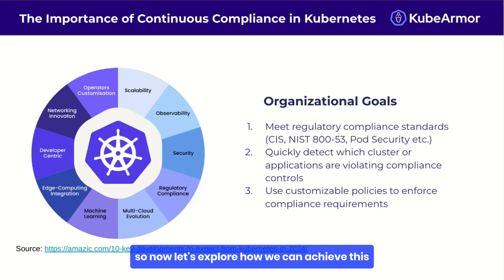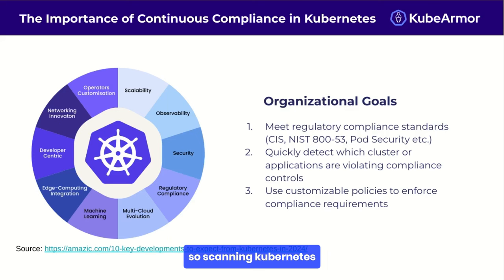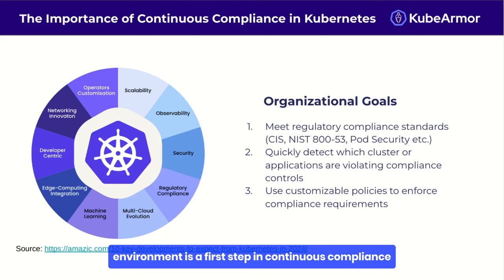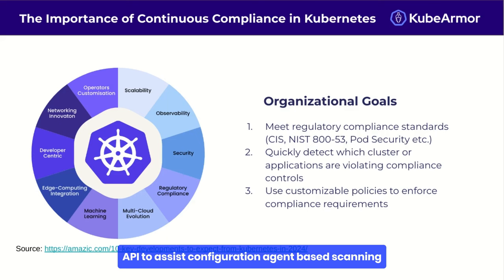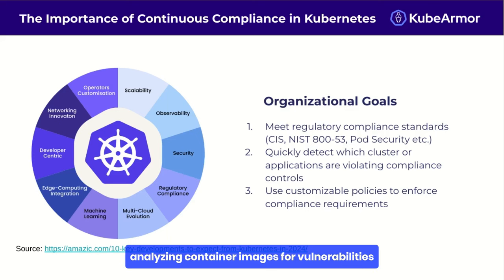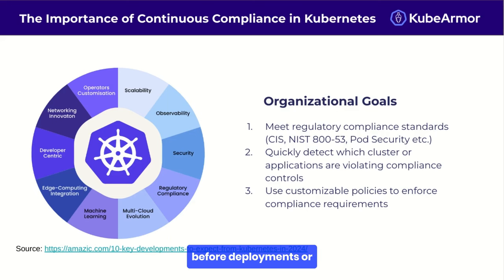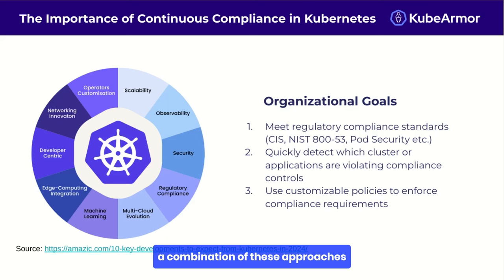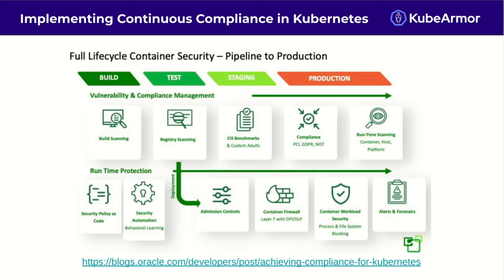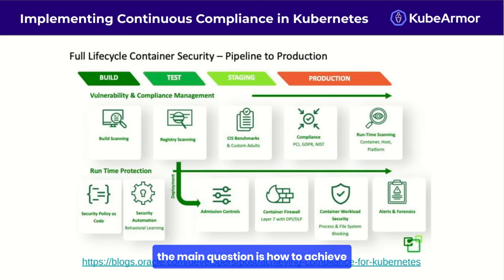Scanning Kubernetes environments is a first step in continuous compliance. There are several approaches: API-based scanning tools that interact with the Kubernetes API to assess configuration, agent-based scanning that deploys agents on nodes to gather deep insights, analyzing container images for vulnerabilities before deployment, and monitoring running containers for anomalies and policy violations. Each method has its strengths, and a comprehensive strategy often involves a combination of these approaches.